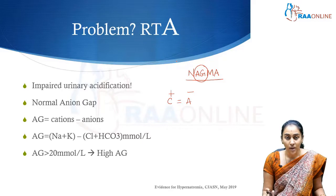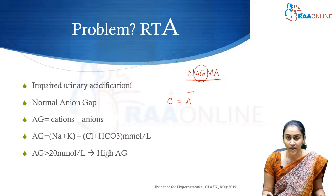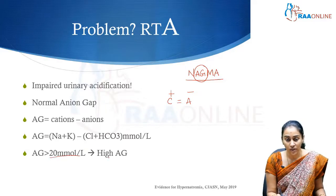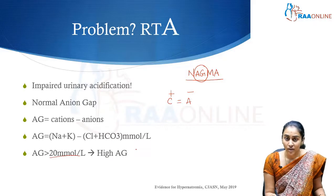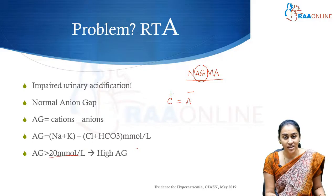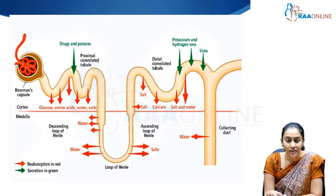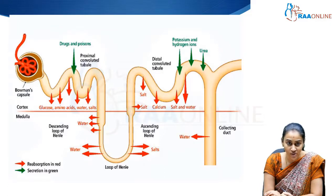A normal anion gap varies between 16 to 20 millimoles per litre, and anything more than 20 millimoles per litre is referred to as a high anion gap. High anion gap metabolic acidosis can be seen in diabetic ketoacidosis, ethanol poisoning, and similar conditions. Now let us look at where the different solutes and electrolytes are absorbed.